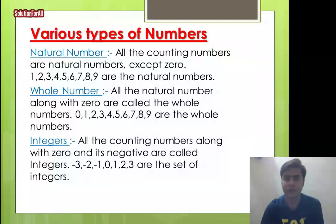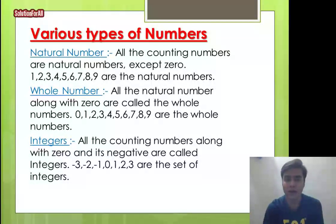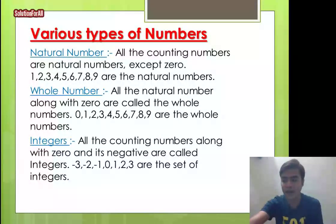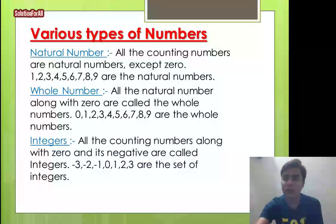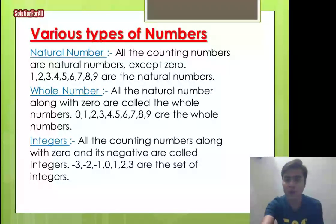Now we look at various types of numbers. The first type is natural numbers. Natural numbers are all the counting numbers excluding zero — that is, 1, 2, 3, 4, 5, 6, 7, 8, 9, and so on. Whole numbers are all the natural numbers along with zero: 0, 1, 2, 3, 4, 5, 6, 7, 8, and 9.